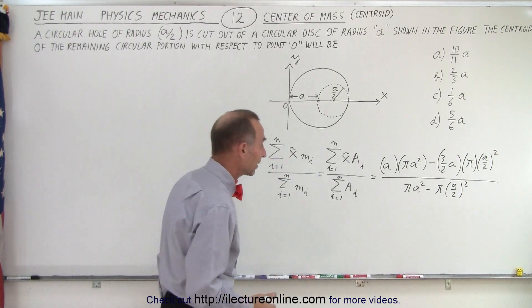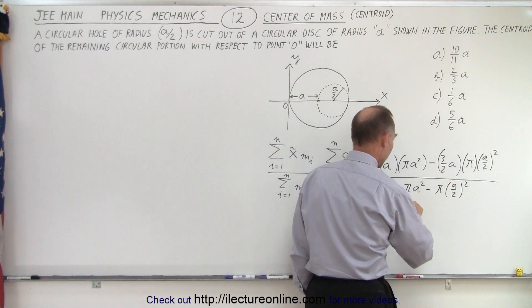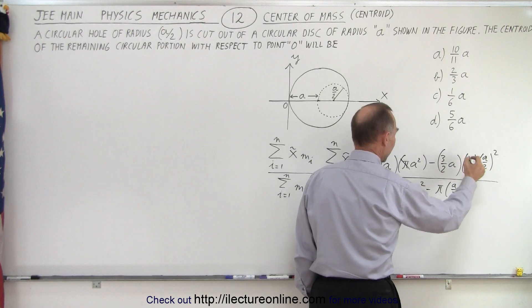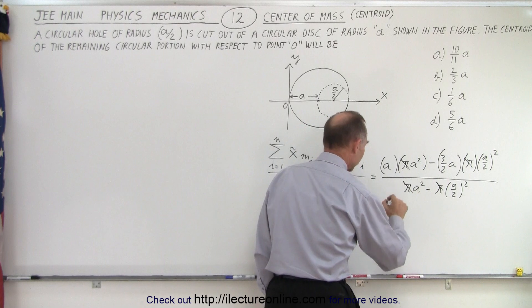Now it's just a matter of simplifying things. Notice we have a pi, a pi, a pi, and a pi. So all the pi's cancel out. That makes it a little bit easier. Now let's go ahead and multiply out and see what we got.